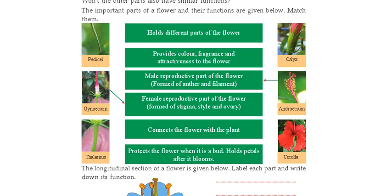Next to androecium is the gynoecium. The gynoecium includes not only the top part but the full structure. Inside is the ovary, and inside this white-colored slender thread-like part, at the top you can see the stigma. The gynoecium is the female reproductive part of the flower.